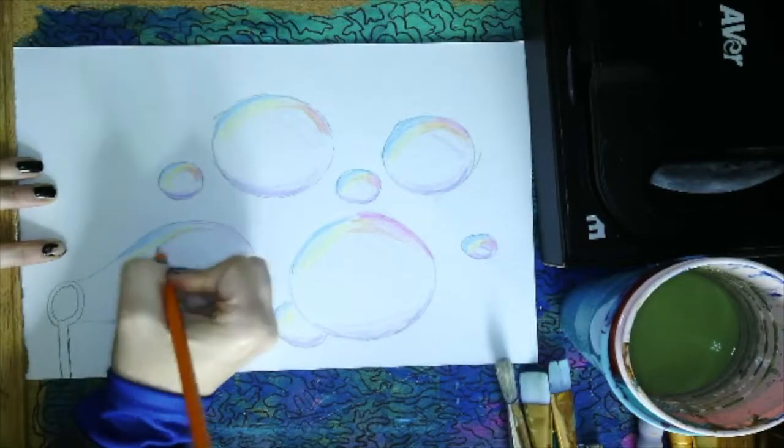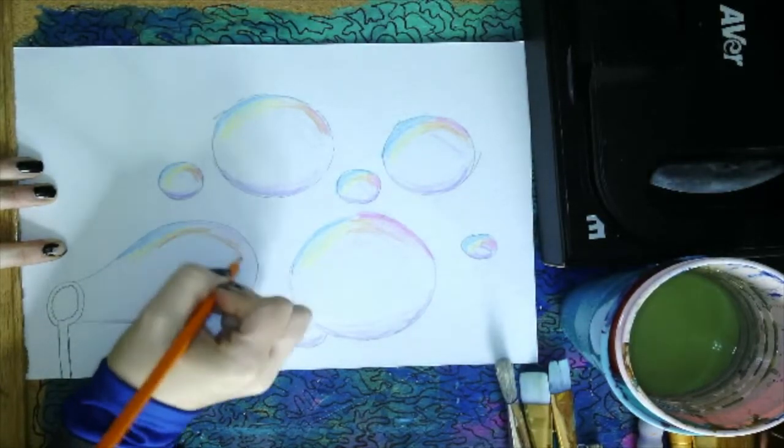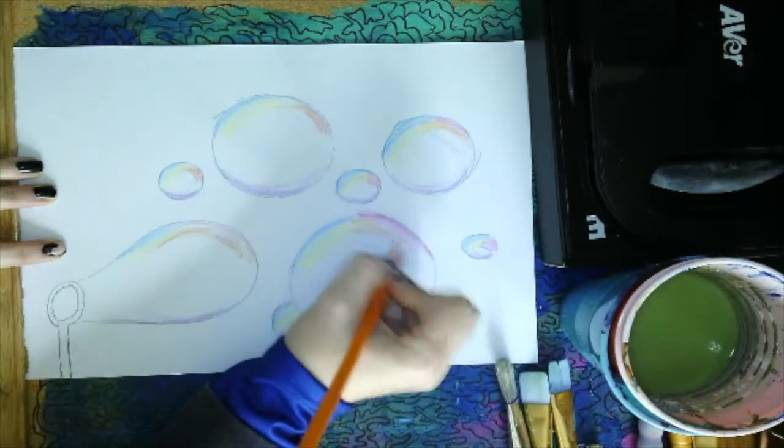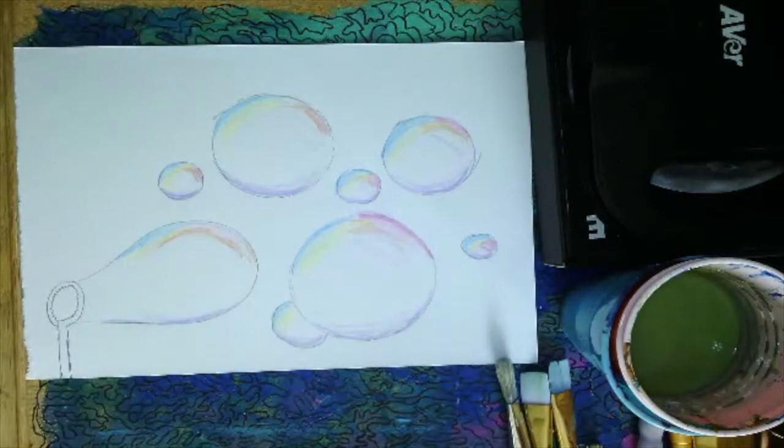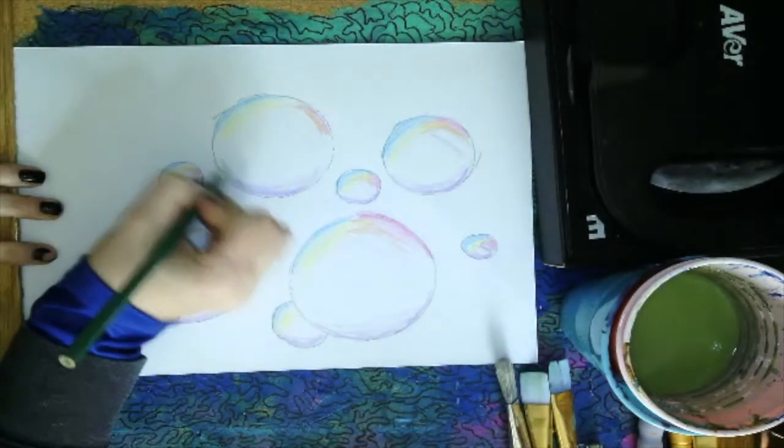And again, you could use whatever colors you want. One thing that is going to be key to making it look like a bubble, is that it should have a bunch of white in it, but also that you need that highlight that's going to make it look like this light is shining off of it.